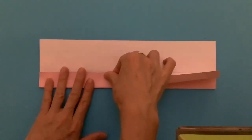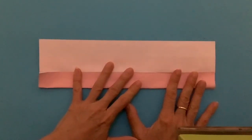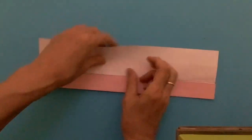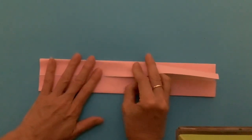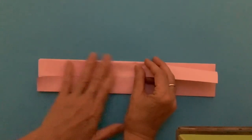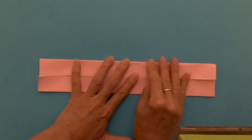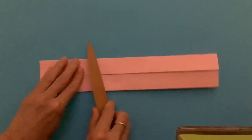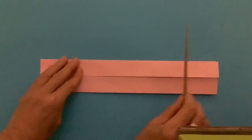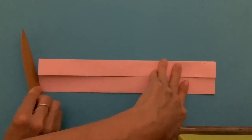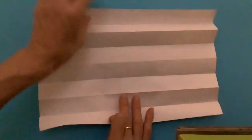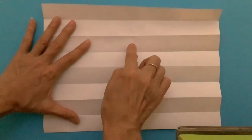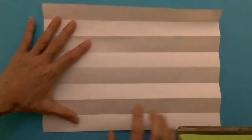And again to the center. By doing this, folding this to the 8s. And again to the center, tight crease. One, two, three, four, five, six, seven, eight. Very good.